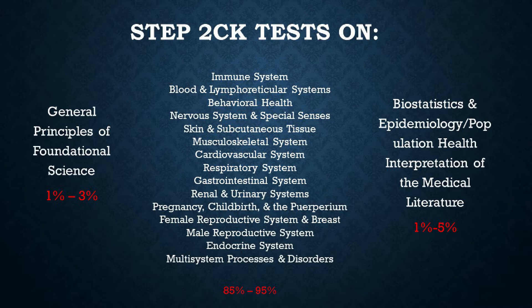This video is dedicated entirely to step two. The subject list from the official USMLE site shows: 1–3% of the exam covers general principles of foundational science; 85–95% covers immune, hematological, behavioral health, nervous, skin, musculoskeletal, cardiovascular, respiratory, GI, renal systems, pregnancy, childbirth, female and male reproductive systems, endocrine system, and multiple system processes and disorders; and 1–5% covers biostatistics, epidemiology, population health, and interpretation of medical literature.